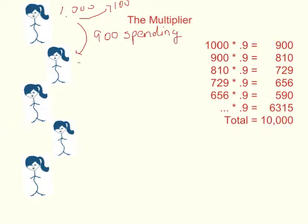Well, they are going to save 10%. So 10% of $900 is $90. It goes into savings. And they're going to spend the other 90%. 90% of $900 is $810.